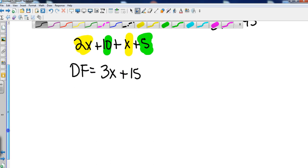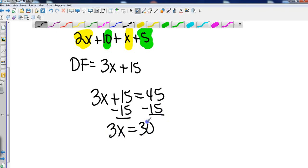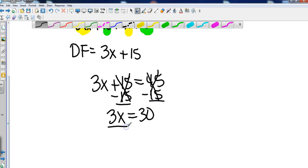So we're going to subtract 15 from both sides and get 3x equals 30. And then we finish it off by dividing both sides by 3, giving us a final answer, if they were asking, of x equals 10.